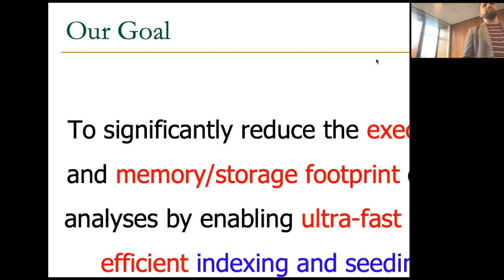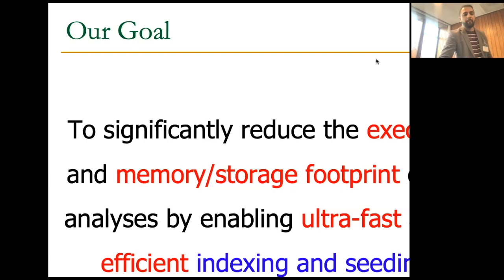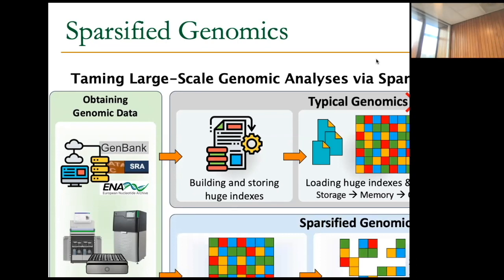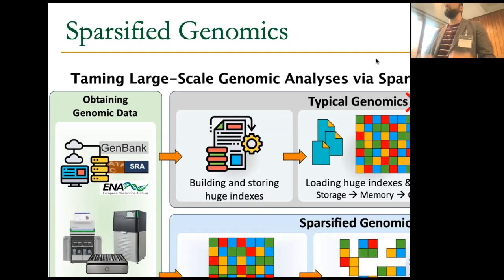We strongly believe that if we improve the indexing and seeding steps in any genomic analysis, we will improve execution time, and not only that, but also peak memory and storage. We are proposing Sparsified Genomics as a way to handle this. In typical genomics, you load the index and the reference genome plus the FASTQ files and then start the analysis. But what we envision: you load only the reference genome — no pre-built index at all — load the FASTQ file, sparsify the reference genome, and deal only with the sparsified version.